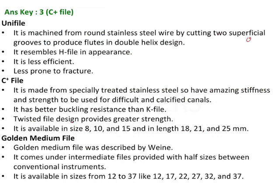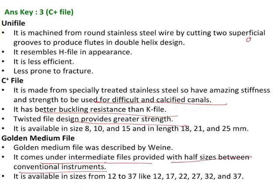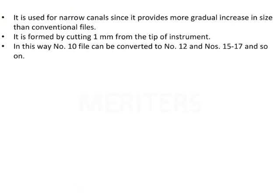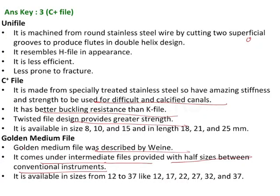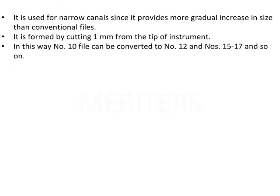Other options include: unifile — a male H file in appearance, less efficient and prone to fracture; C files — twisted file design providing greater strength, better buckling resistance, can be used for difficult and calcified canals; and golden medial files, which are intermediate files provided with half sizes between conventional instruments as described by V. They are made by cutting 1 mm from the tip, so a number 10 file becomes number 12, number 15 becomes 17, and so on.